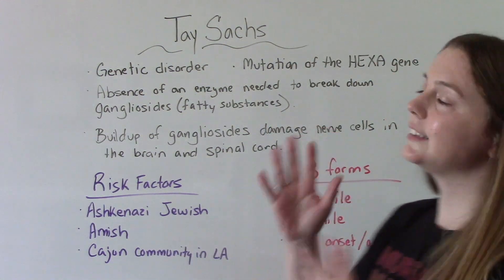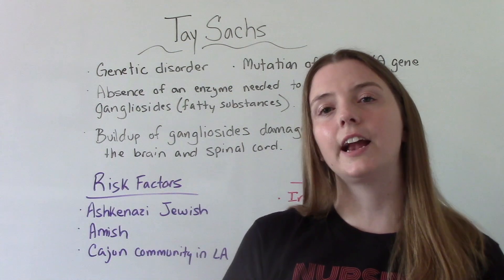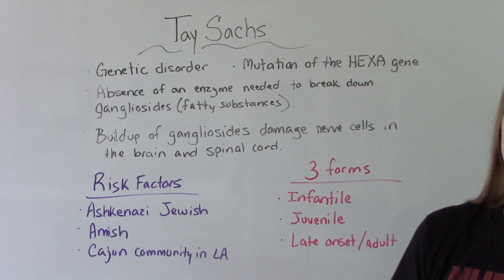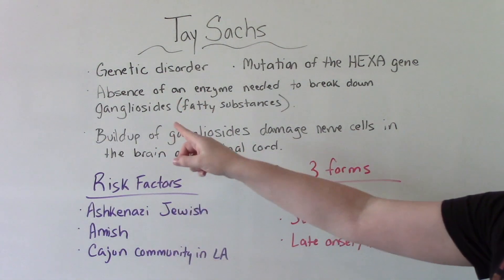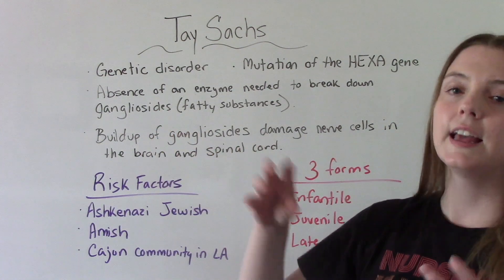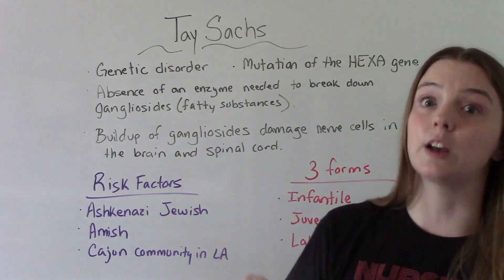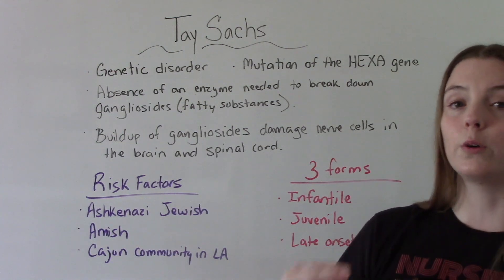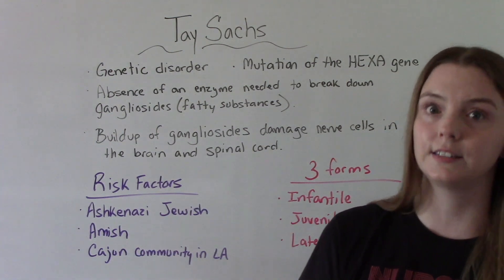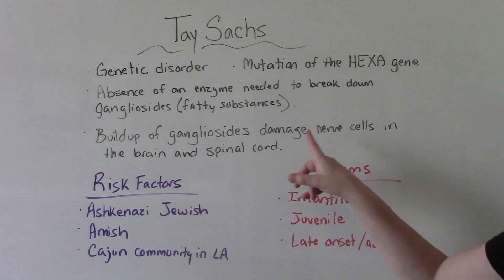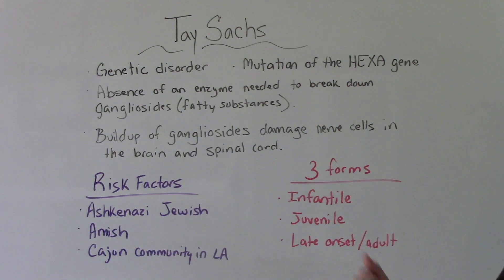Tay-Sachs is a genetic disorder inherited from both parents and is a mutation of the HEXA gene. There is an absence of the enzyme needed to break down gangliosides, which are fatty substances. When they don't get broken down, they build up to toxic levels and cause damage to nerve cells in the brain and spinal cord.